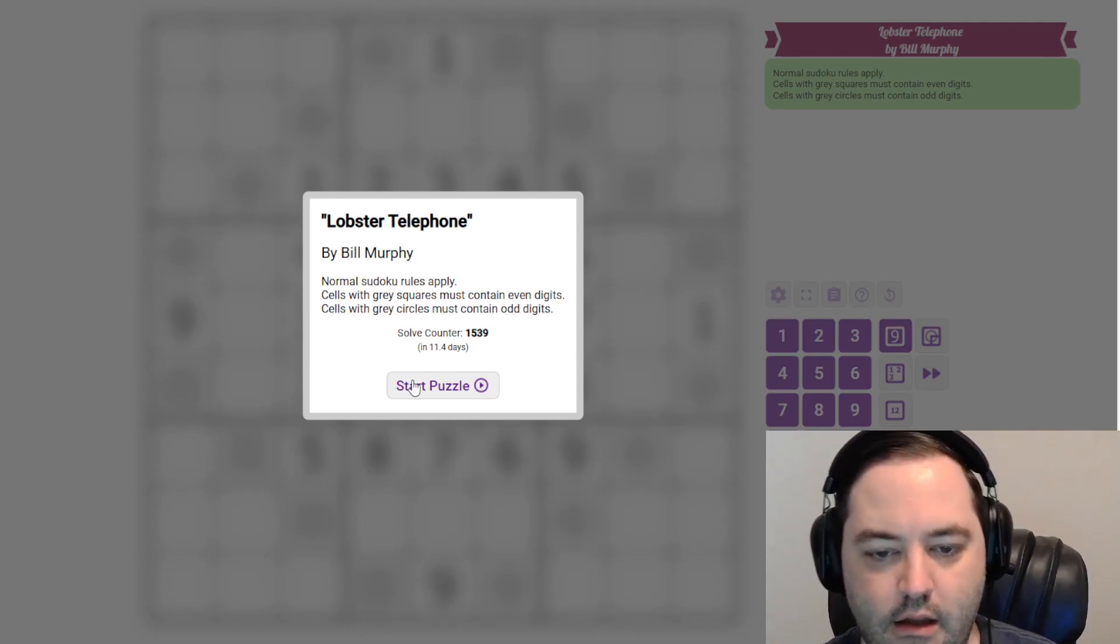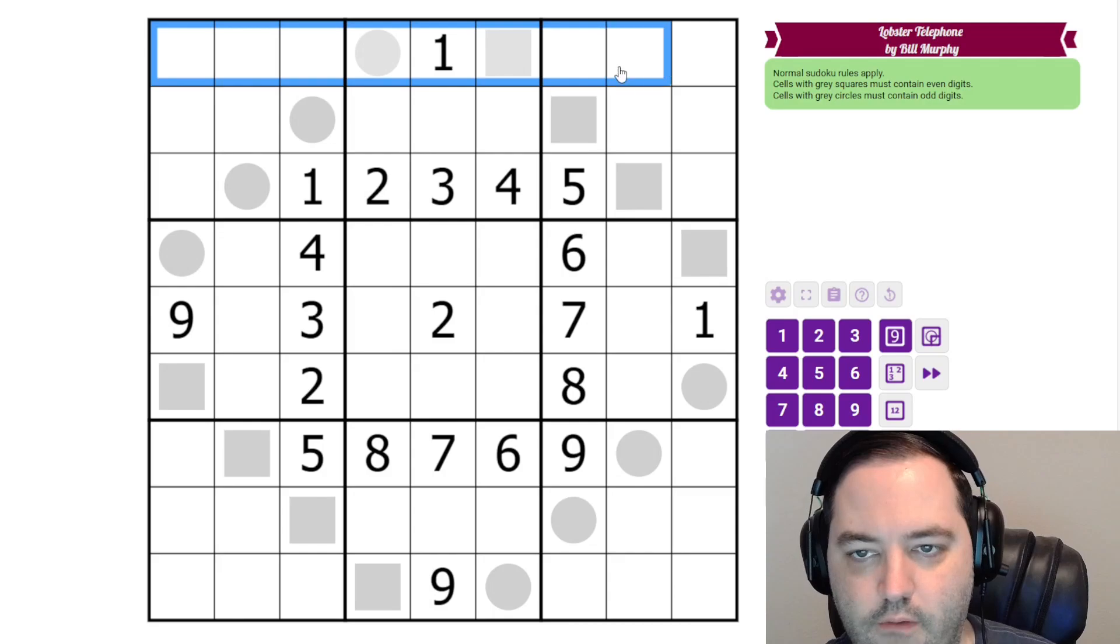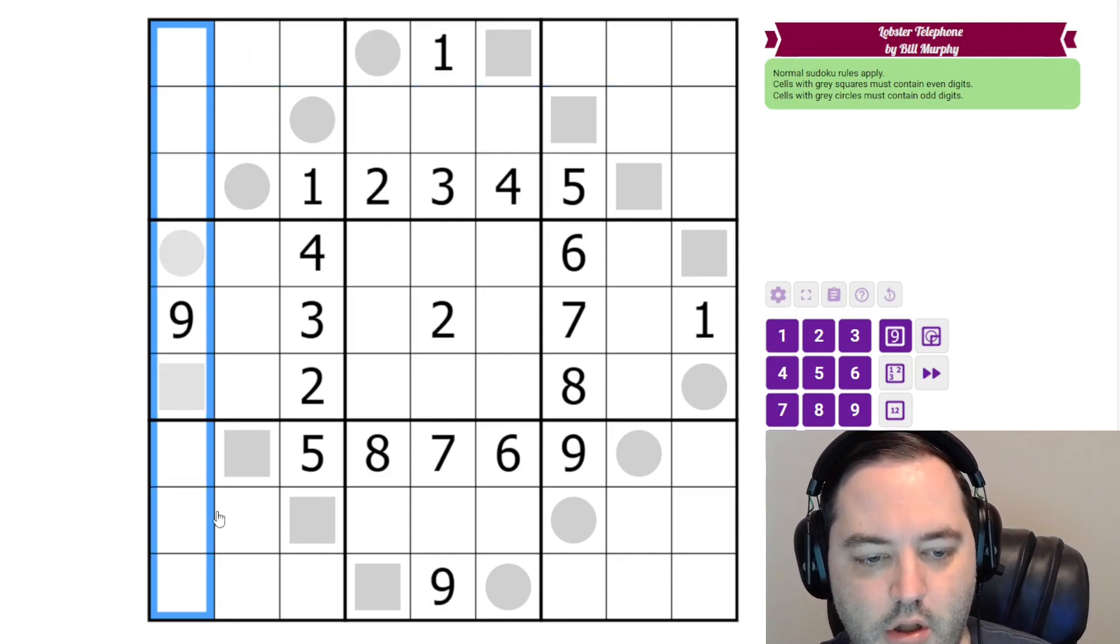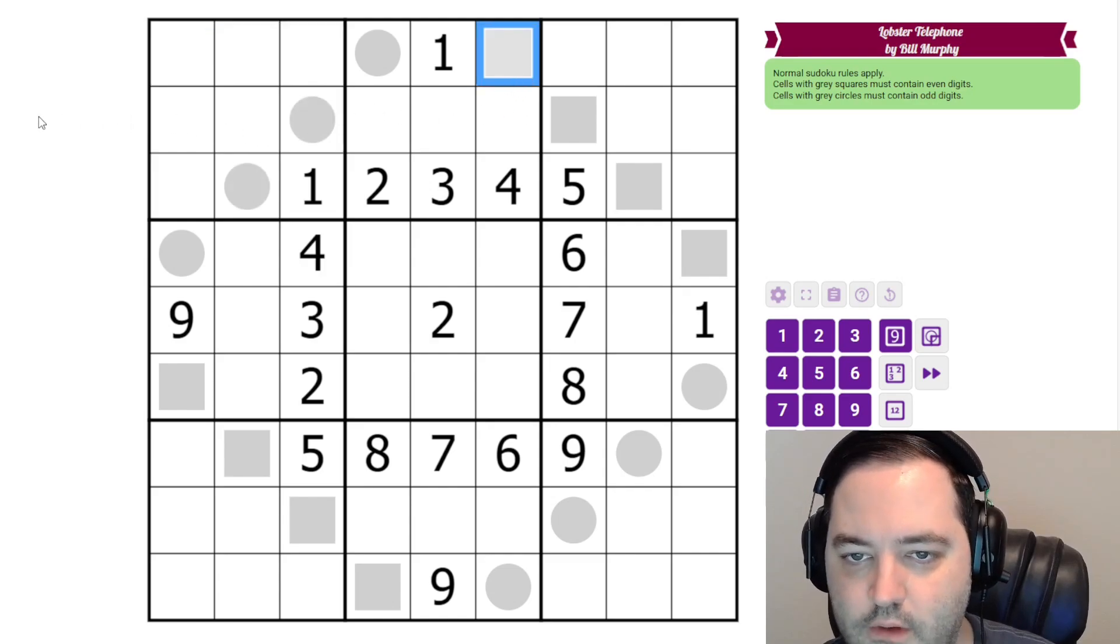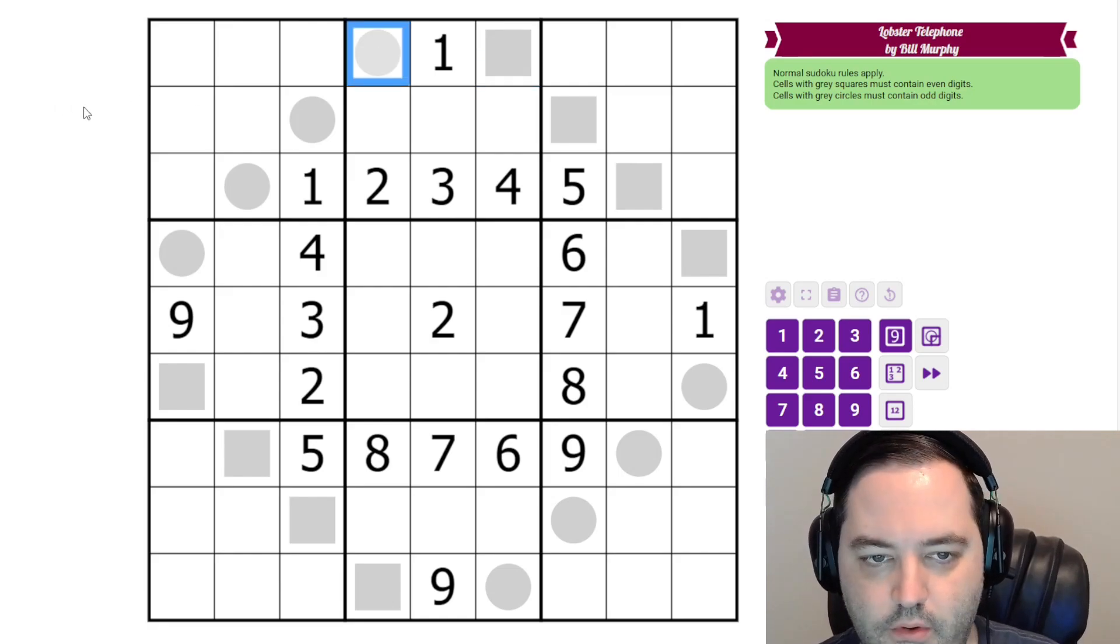This is an even and odd Sudoku. So we have normal Sudoku rules one to nine in each row, column, and three by three box. Additionally we have some squares in the grid. Digits in those cells must be even. And where we have circles the digit in that cell must be odd. And those are the rules.